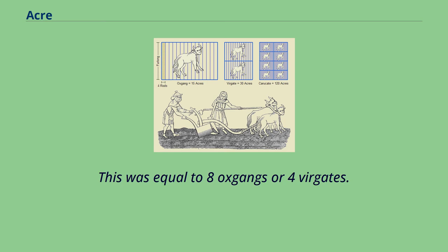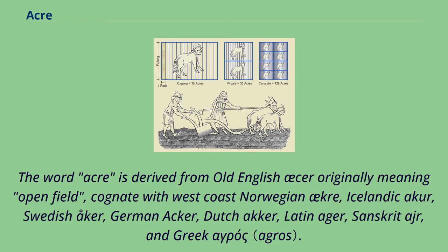The word acre is derived from Old English, originally meaning open field, cognate with West Coast Norwegian ekrae, Icelandic akur, Swedish åker, German Acker, Dutch akker, Latin ager, Sanskrit ajra, and Greek αγρός. In English, an obsolete variant spelling was aker.